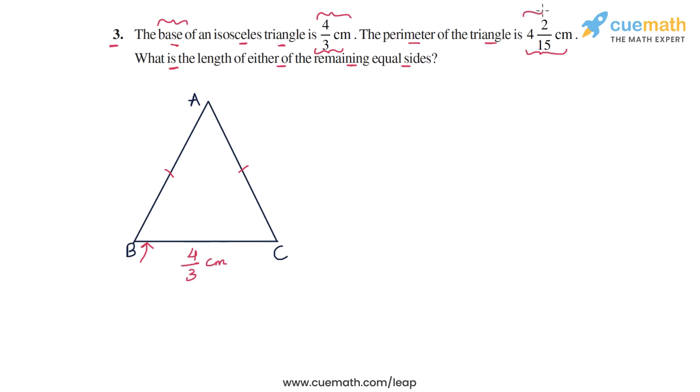We also know that the perimeter is 4 and 2 by 15 centimeters. So AB plus BC plus AC, the sum of the three sides, is equal to 4 and 2 by 15 centimeters. But the problem is we don't know AB and AC. We don't know the lengths of the remaining two sides. So what we can do is assume their lengths as x centimeter and then the other side will also be x centimeters.